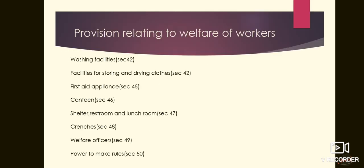Now we are moving to another topic: provisions relating to the welfare of workers. We have seen the total safety provisions; now we look at worker welfare. First is washing facility, in session 42. Adequate and suitable washing facilities shall be provided and maintained in the factory for the use of workers. Such facilities shall be easily accessible and kept clean.